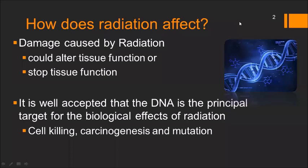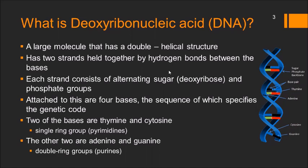The question most of us have is how does radiation affect? The damage caused by radiation could alter tissue function or it could stop tissue function. It has been well accepted that DNA is the principal target for biological effect of radiation such as cell killing, carcinogenesis and mutation. So we need to know about the DNA — the deoxyribonucleic acid.